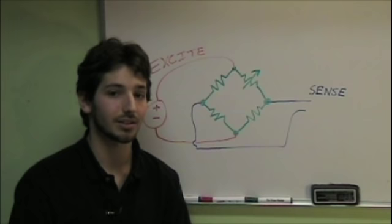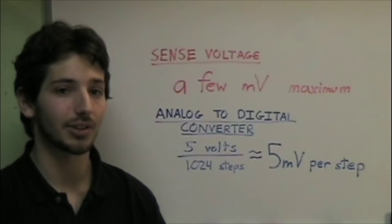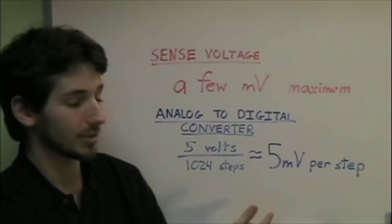In fact, for the scale, the total voltage difference is just a few millivolts when a person's full weight is applied. Since the analog-to-digital converter on the chip can only read 1024 divisions in 5 volts, or about 5 millivolts per step, this signal is way too small, so we need to amplify it.